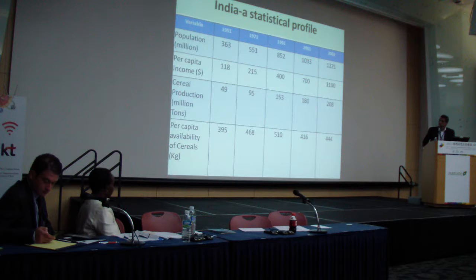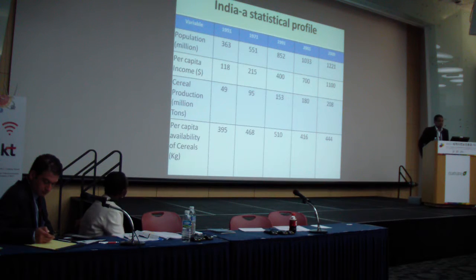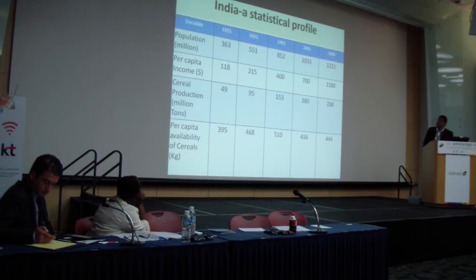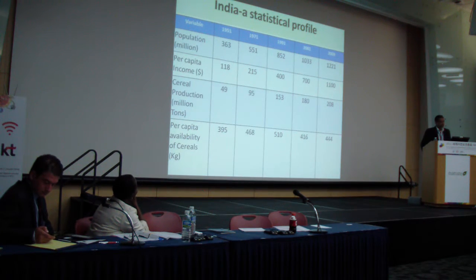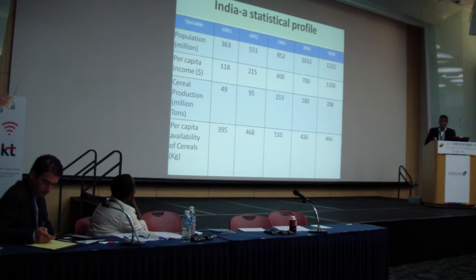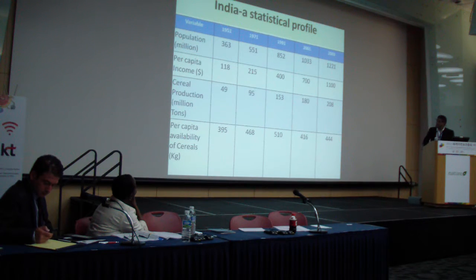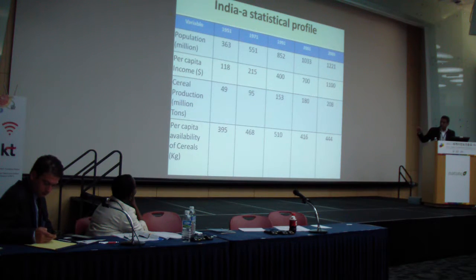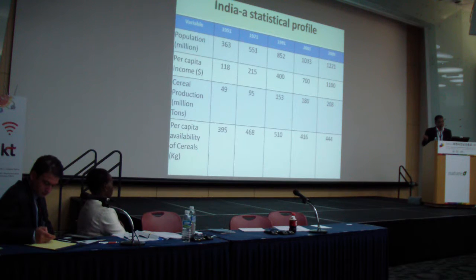India is one of the largest populated countries in the world, with almost 1.2 billion people, and has added around 220 million people in the last decade. Per capita income is around $1,100. Steel production, which was 49 million tons in 1951, has increased to almost 210 million tons. But per capita availability of cereals has remained constant throughout the last 60 years — which is the key challenge India is facing right now.